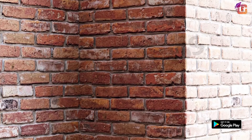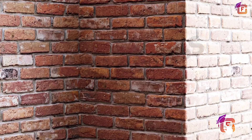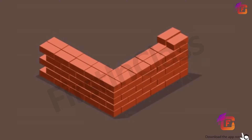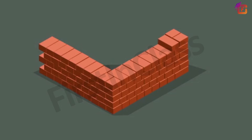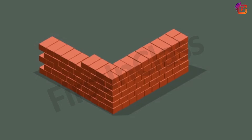Let's understand crystal lattice and unit cell further by comparing with a wall. We know that a wall is made of bricks having a regular arrangement. The complete wall represents the crystal lattice, while each brick represents a unit cell. Hope you have understood the concept of crystal lattice and unit cell.